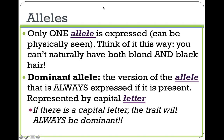Only one allele is ever expressed at one time. And what expressed means is it can be physically seen. Think of it this way — you can't naturally have both blonde and black hair. You might have the versions of both of those genes, one from each parent, but only one of them will ever be seen. The version of the allele that is always expressed, if it is present, is called the dominant allele, and that's represented by a capital letter. Remember, there are always two letters — if there is one capital letter, that trait will always be dominant. One dominant allele is all you need.